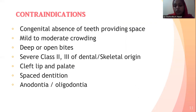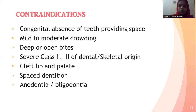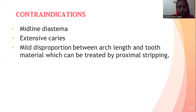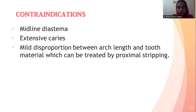In cleft lip and palate there will be hypodontia — that is, a lesser number of teeth — and in anodontia and oligodontia there will be absence of teeth. So in these cases there will already be missing teeth and presence of space. If we extract more teeth, it will aggravate the problem. Other contraindications include midline asymmetry, extensive caries, and mild discrepancy between arch length and dental material.